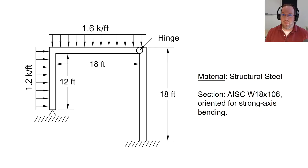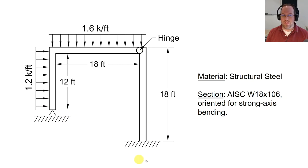Welcome back everyone. Today we're talking about frame analysis. This builds on what we did in lesson three on truss analysis, so check that out first and then come right back here. Today we're going to consider a simple two-dimensional frame with one beam and two columns. Our boundary conditions are a pin on one side and a fixed end on the other.